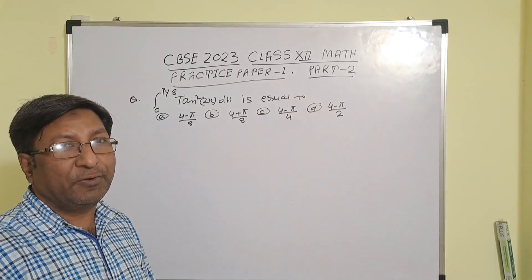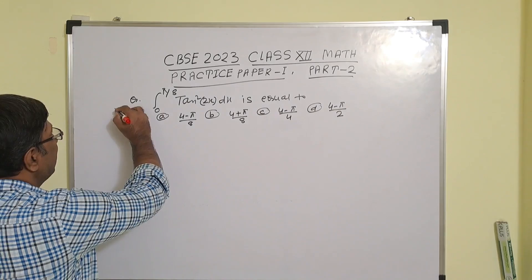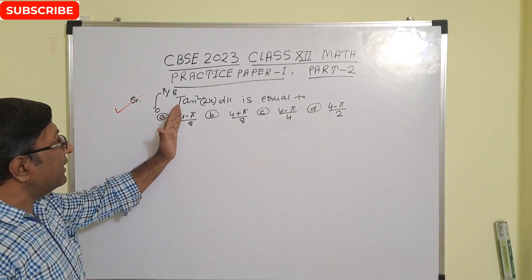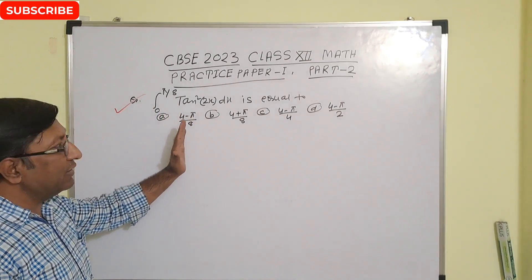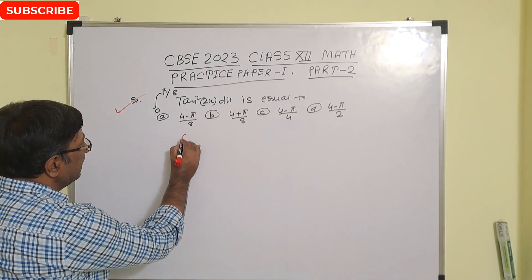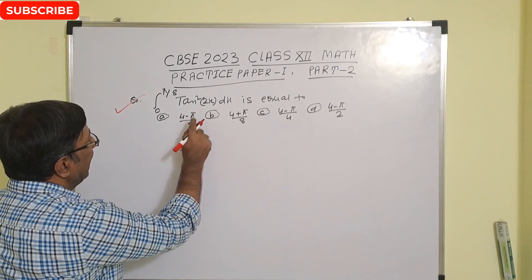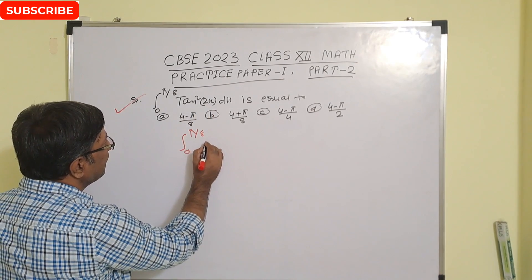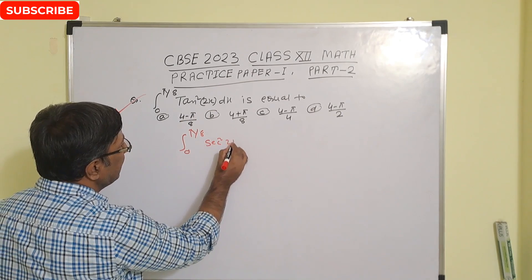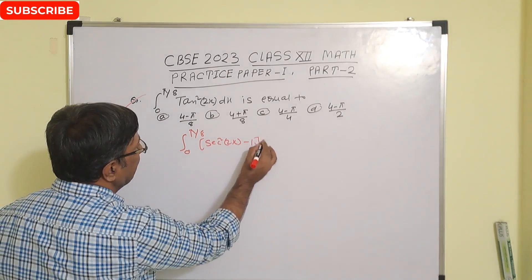Most important question of integration. The question is the integral from 0 to 5π/8 of tan²(2x) dx. For this type of question, first rewrite tan²(2x) as sec²(2x) minus 1. So this becomes the integral of sec²(2x) minus 1 dx.